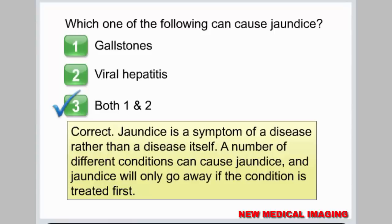Jaundice is a symptom of a disease rather than a disease itself. A number of different conditions can cause jaundice, and jaundice will only go away if the underlying condition is treated first.